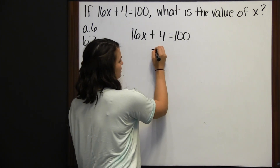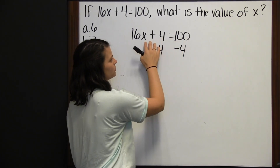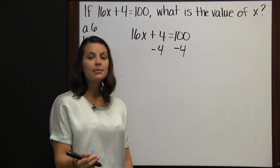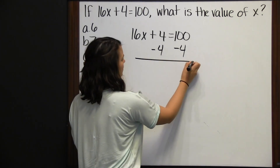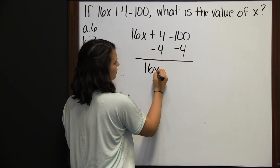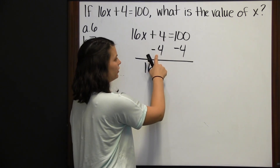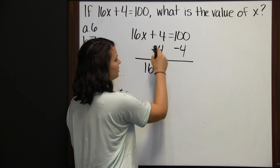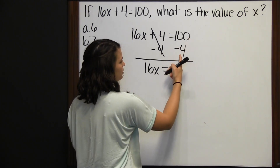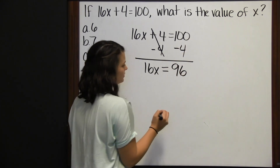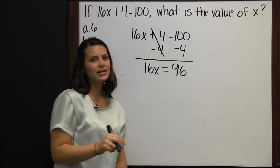We start by subtracting 4 from both sides. Since both sides are equal, we have to do the same thing to both sides. So we have 16x plus 4 minus 4 — those are additive inverses, so they cancel out. That gives us 16x equals 96.